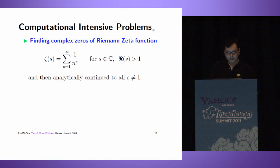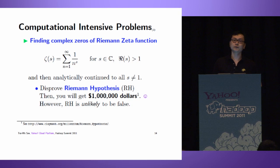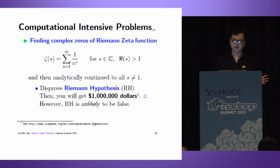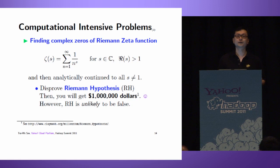We want to compute complex zeros of the Riemann Zeta function. The Riemann Hypothesis says all non-trivial complex zeros lie in the critical strip. If we find one zero outside the critical strip, we disprove Riemann Hypothesis and get a million dollars - a happy ending. However, RH is unlikely to be false. Most mathematicians believe it's true, so computing zeros provides more evidence supporting RH.